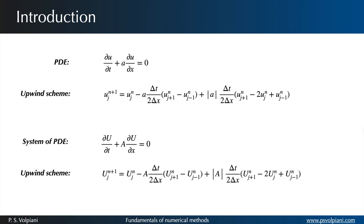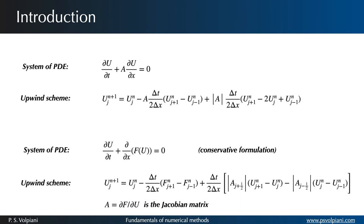We can write it in a similar way if we consider a system of equations. The generalization to a system of conservation laws is straightforward. Here A is the Jacobian matrix. To make things clearer, let's focus our attention now on the 1D Euler equations.